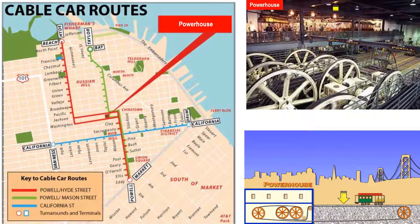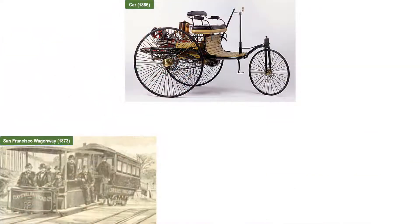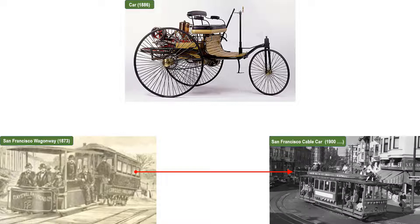In the background, you can see souvenir shops and places to eat and drink. This Wagon Way is the only one of its kind in the world and is a top tourist attraction in the city of San Francisco. It was in 1886 that the first vehicle people would refer to as a car was invented. Sometime in the beginning of the 1900s, the San Francisco Wagon Way updated to its present-day name, the San Francisco Cable Car.